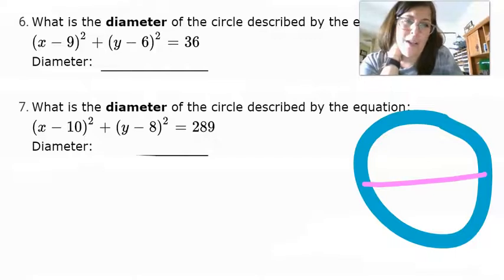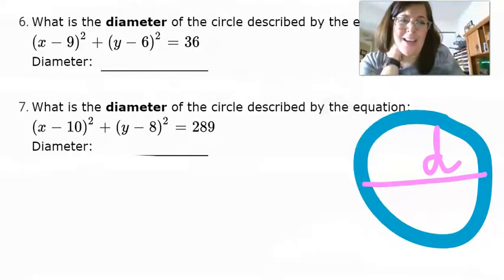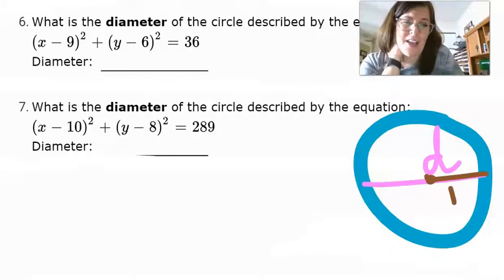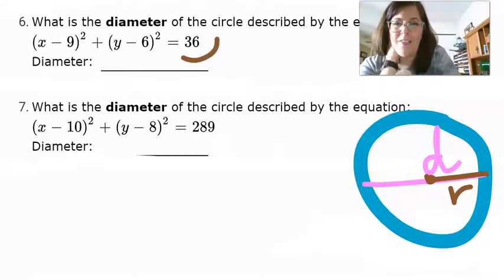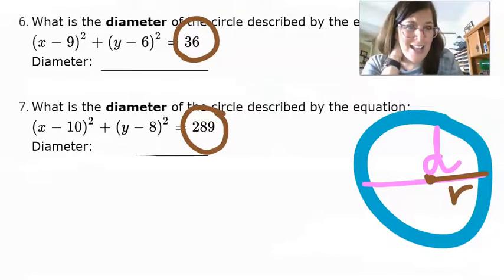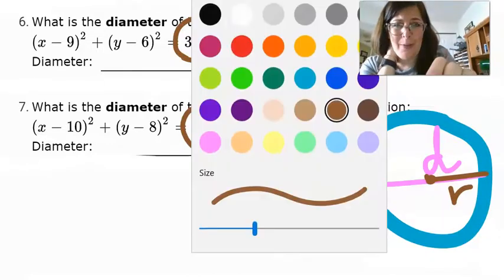Okay, the whole way across is the diameter and the radius is just half of that, right? So if I can figure out what the radius is, I could double it and I'll tell you what the diameter is.